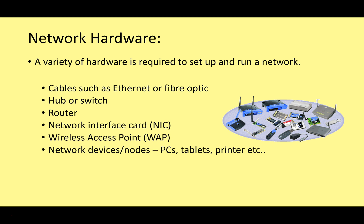A variety of hardware is required to set up and run a network. The types of hardware you need to describe at GCSE level include cables, which we've already looked at previously, hubs and switches, routers, and network interface cards (NICs). We also need to know about wireless access points (WAPs), and of course you'll need different nodes - devices to connect together like PCs, tablets, printers, etc.